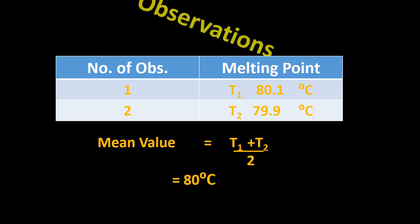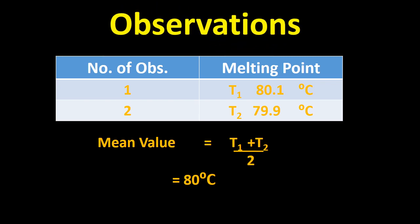These are observations. You have to put these observations in a separate table with headings. First heading is apparatus, second is experiment, and third is observation. We are noting down the melting points. We performed the practical and got a reading of 80.1 Celsius. We did it again and got 79.9 Celsius. We have to take the average. When we took the average, we got 80 Celsius. This is the melting point of naphthalene.